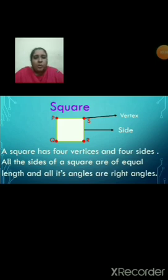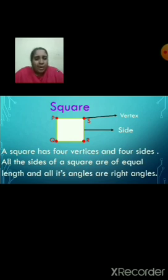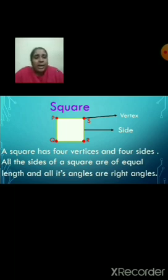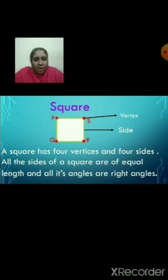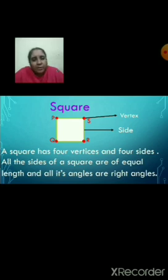Now we are going to see the first geometrical shape — it is a square. You can see the four red dots on the square. These red dots are called vertices. If it is one corner, it is called a vertex. Vertex is also called corners. The boundary line on the square is called a side. A square has four vertices and four sides. All the sides of a square are of equal length. For example, if one side of a square is three centimeters, the other sides will also be three centimeters each.